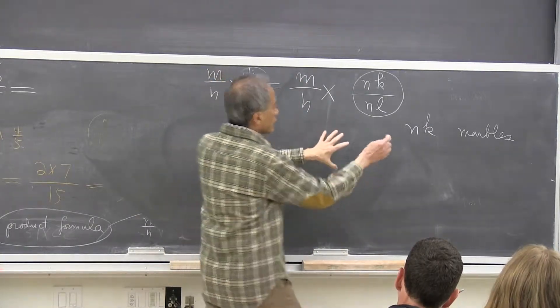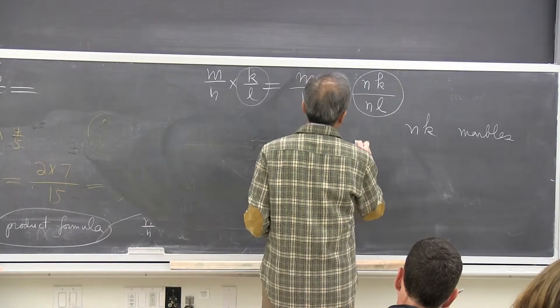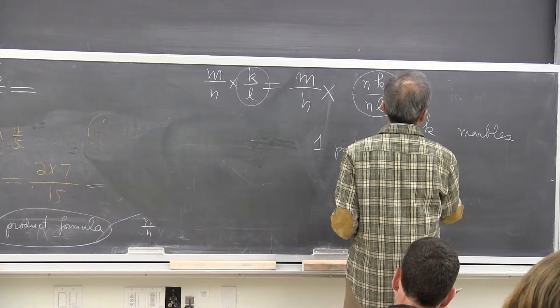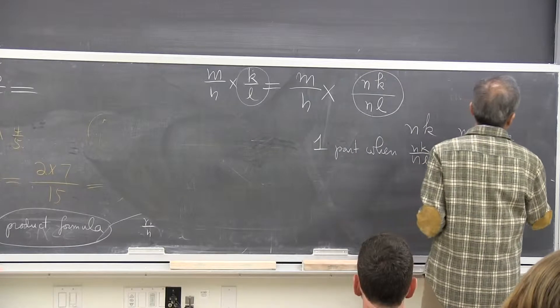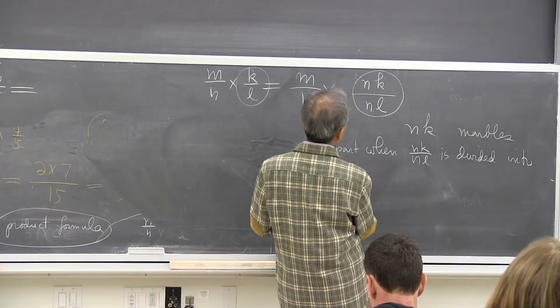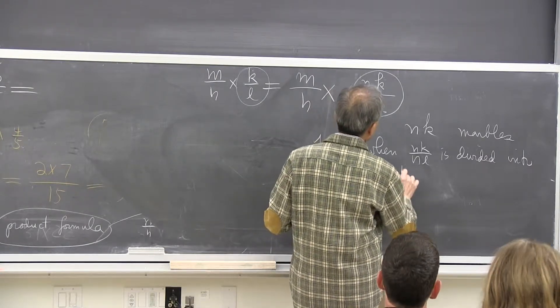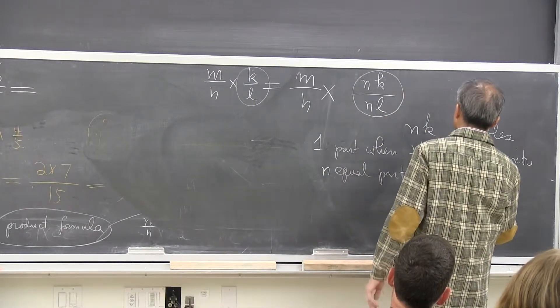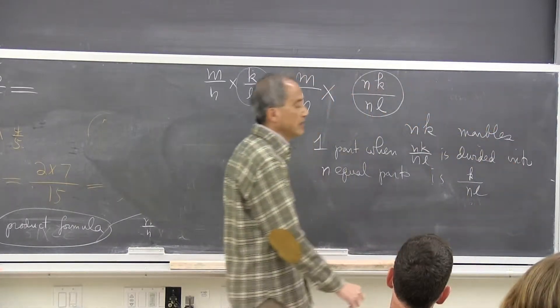So what we say is, one part when NK over NL is divided into N equal parts is K over NL. Of course, K of the marbles is K over NL.